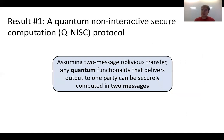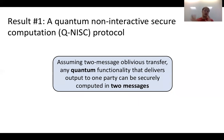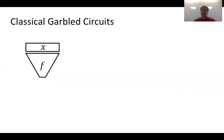Our first result is a quantum analog of this: we show how to construct a quantum NISC protocol. Assuming just post-quantum two-message oblivious transfer, we can construct a two-message protocol for computing any quantum functionality, delivering output to one party.